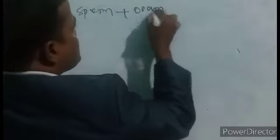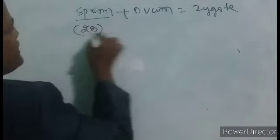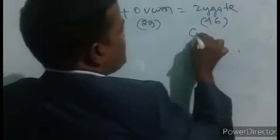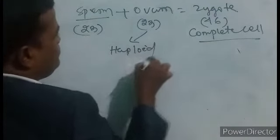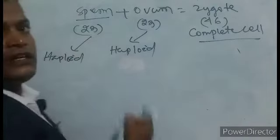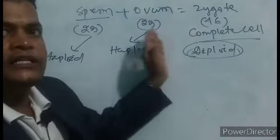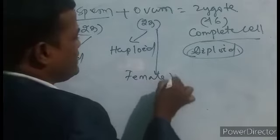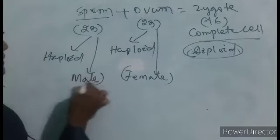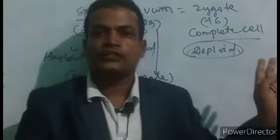Sperm plus ovum equals zygote. This is 23 chromosomes from the sperm and 23 chromosomes from the ovum, giving 46 chromosomes — that is a complete cell. These are called haploid cells. The zygote can be called a diploid cell. Haploid plus haploid equals diploid. Human cells contain 46 chromosomes — 23 contributed by the mother and 23 contributed by the father. Father plus mother equals 46 chromosomes.